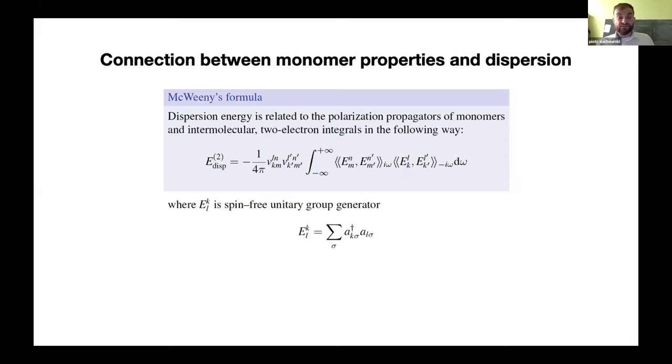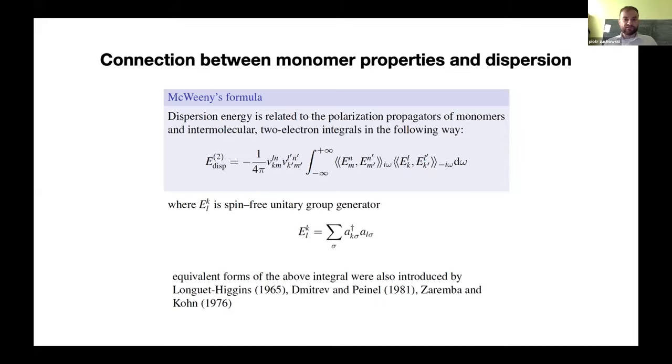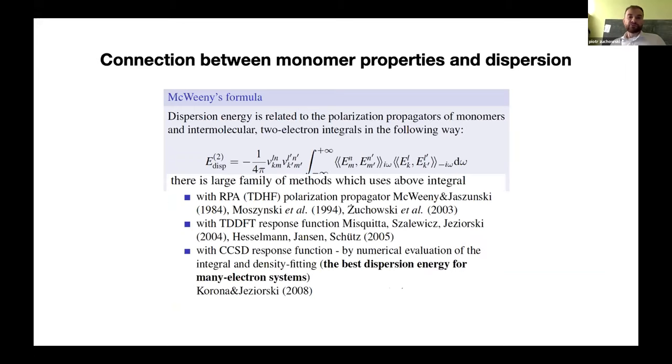So basically there is this connection between dispersion and polarization propagator, which was appearing in the literature for many years, but in this very form was given by Roy McWeeny. So, essentially, the dispersion can be expressed in terms of product of polarization propagators integrated over imaginary frequencies and integrated from plus to minus infinity, and V are essentially the Coulomb integrals. So, there is a large family of methods which uses this expression. And basically, today, I want to show one more extension of this method for coupled cluster theory.